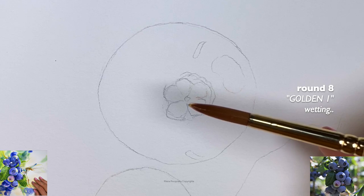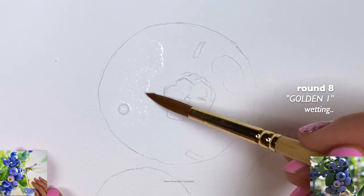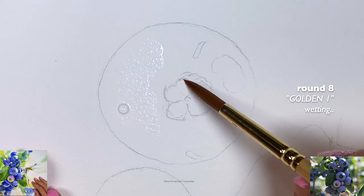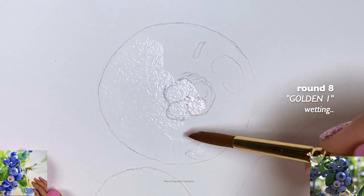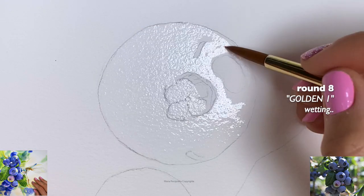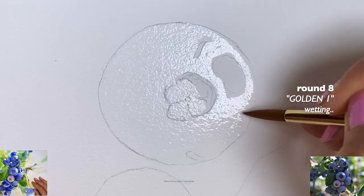Now the first thing you want to do is wet the blueberry. We're going to wet everything except for the highlights. You want to do it for a couple of minutes because that will give you more time. I'm using my round brush size 8.